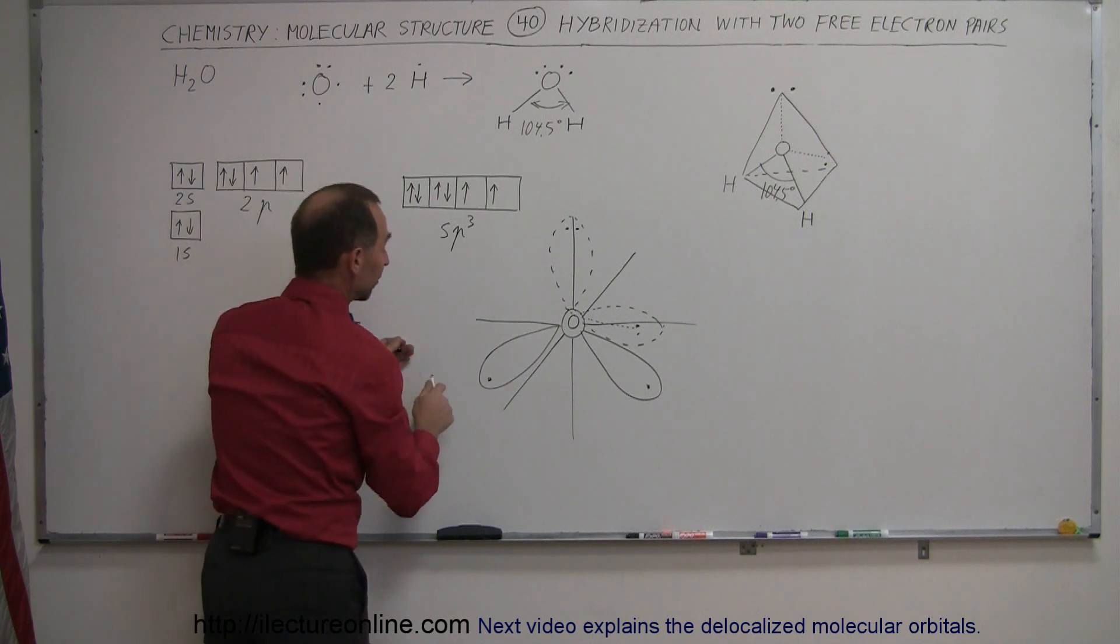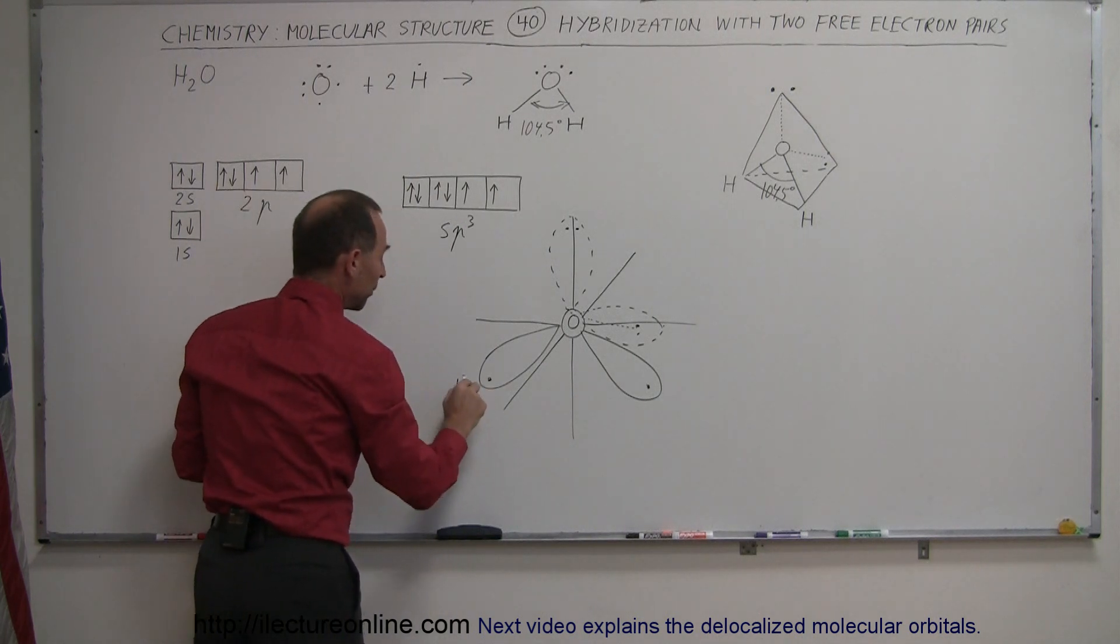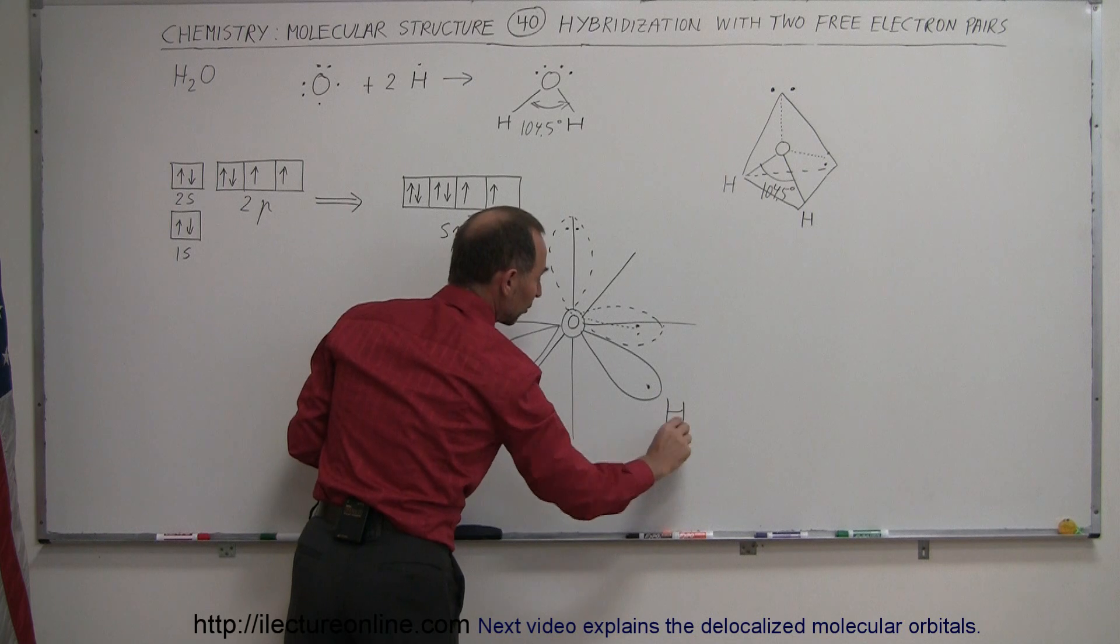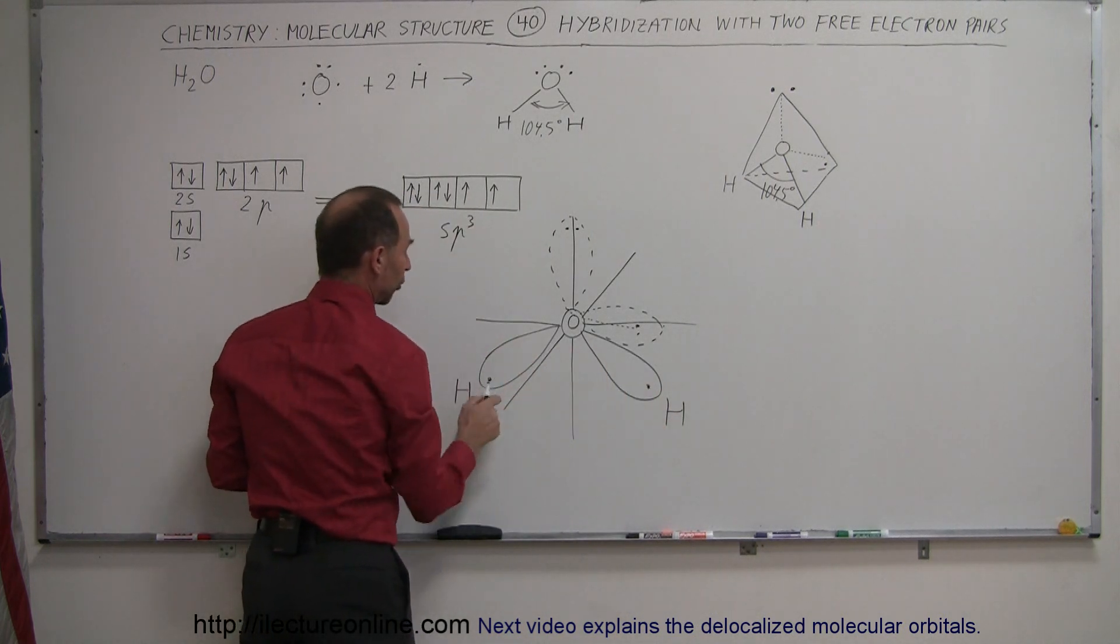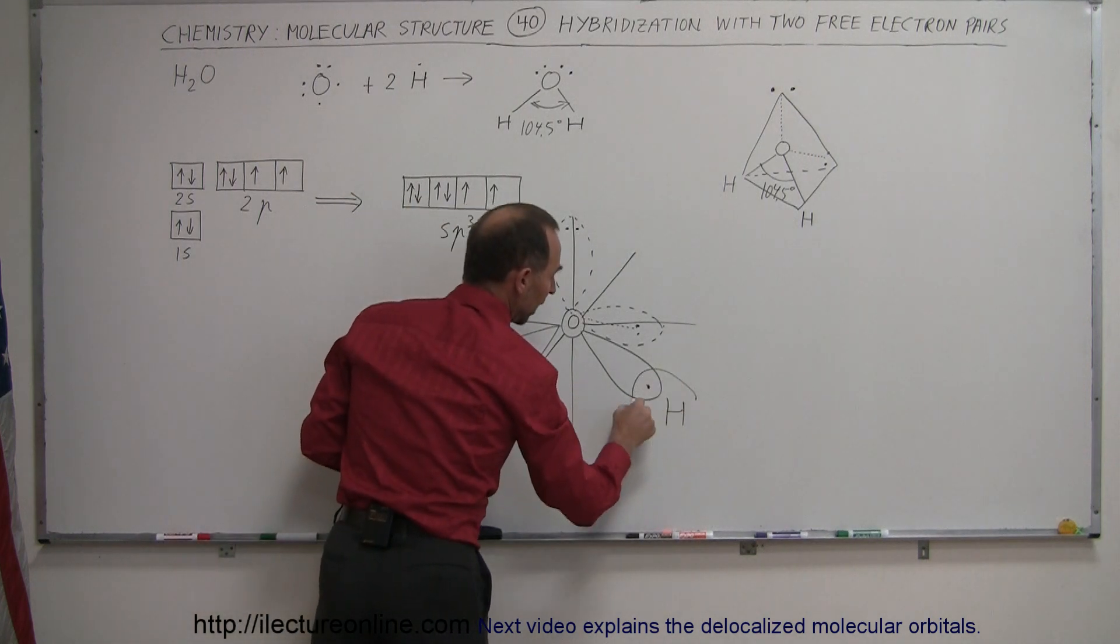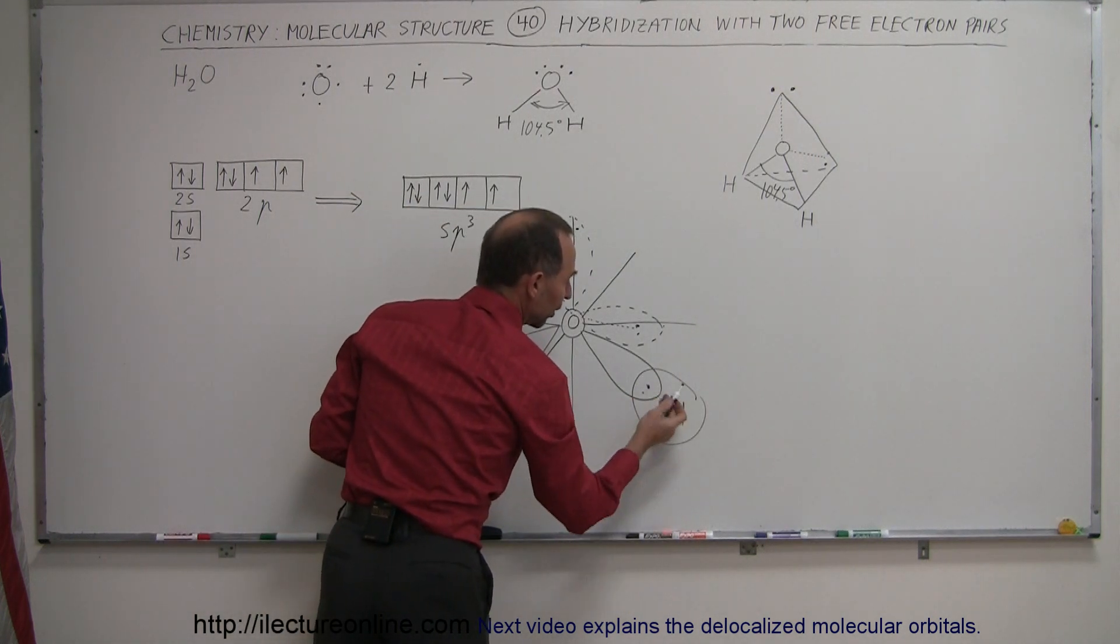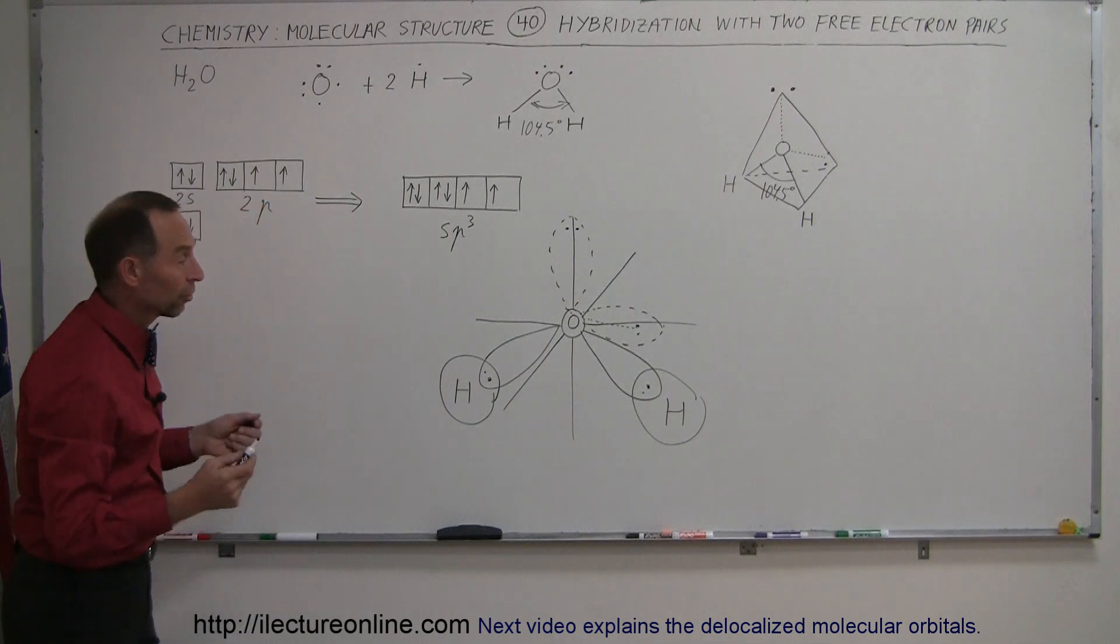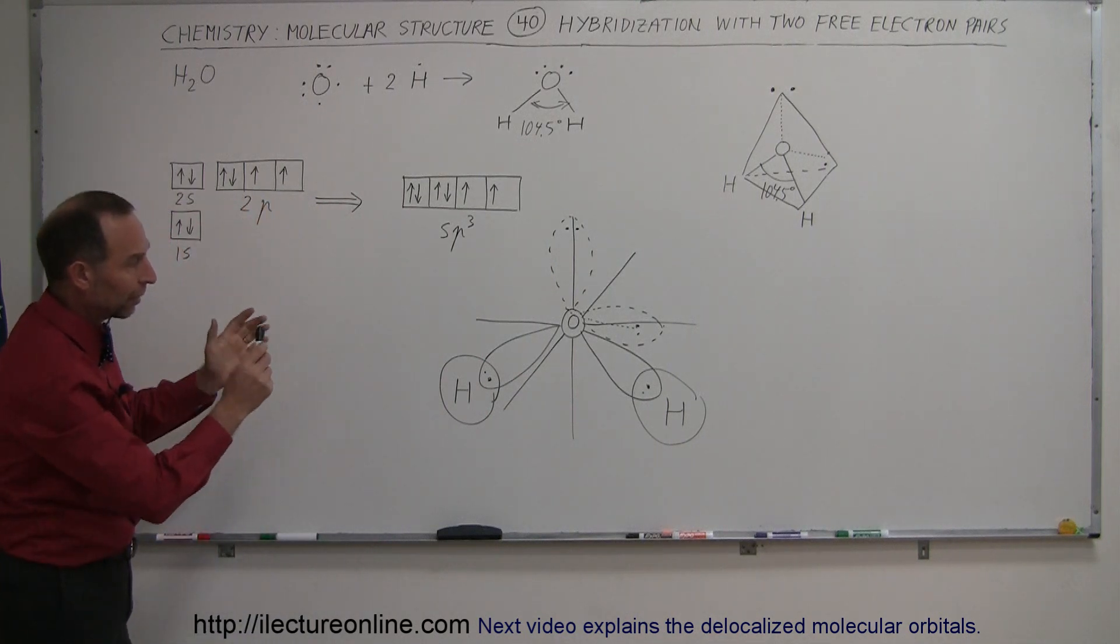So the only two places where this can bond would be right here and right here, because there's only one electron in those orbitals, which will then combine with the hydrogens and also share that one electron that the hydrogen can contribute to the bond.